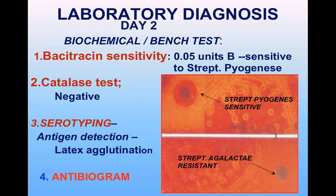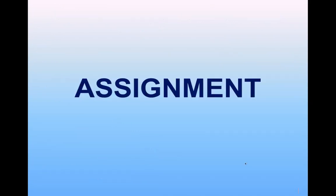Serotyping can also be done for streptococci using latex agglutination, which detects the antigen using known antibodies. Finally, an antibiogram is performed for this specific organism.